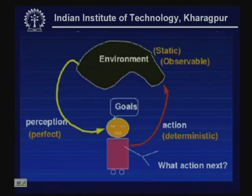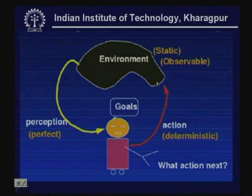Let us get back to a quick introduction of the planning problem. We have an agent which works in an environment. The agent has goals, the agent takes actions, and the actions affect the environment. The agent receives percepts through its sensors from the environment. The objective is to plan the next action or sequence of actions so that it can achieve its goals.